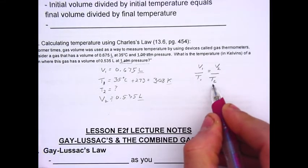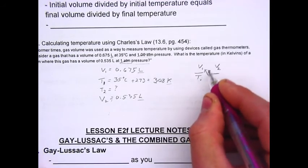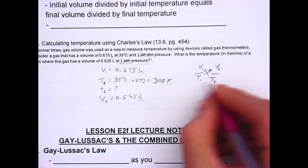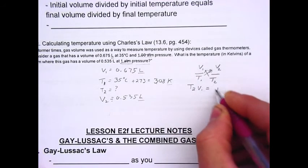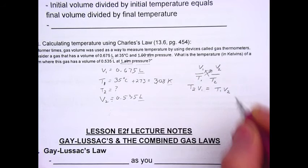Since T2 is a denominator, my first step is to make it a numerator by cross-multiplying. So, that means that T2 times V1 is equal to T1 times V2.